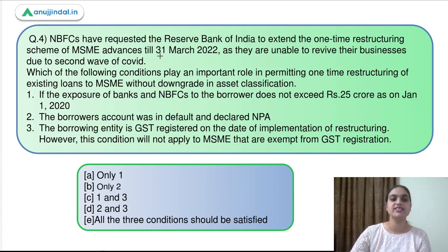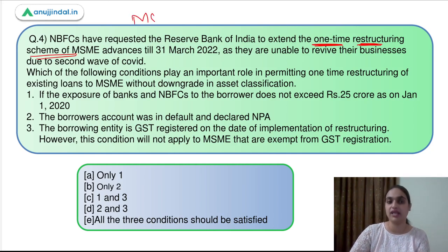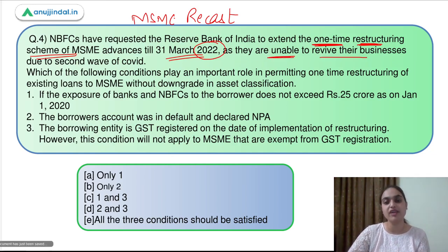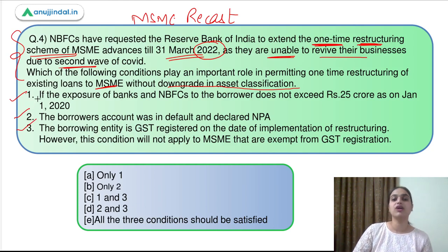Now let's move on to the fourth question. This question says that NBFCs have requested the Reserve Bank of India to extend the one-time restructuring scheme of MSME — that is the MSME recast scheme — and it should be extended till 31st March 2022. This request has been made by NBFCs to RBI because they are unable to revive their businesses due to the second wave of COVID. Which of the following conditions play an important role in permitting one-time restructuring of existing loans to MSMEs without downgrading their asset classification? We need to identify which of the stated conditions are correct.